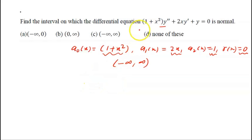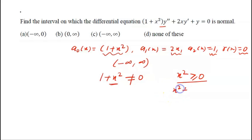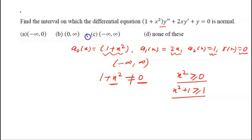We also need to check where 1 + x² = 0. Since x² ≥ 0 for any real x, we have x² + 1 ≥ 1, so 1 + x² can never be 0. Therefore, we do not have to exclude any point, meaning the differential equation is normal in the whole interval (-∞, ∞). Easy question — the correct option is the one showing (-∞, ∞).